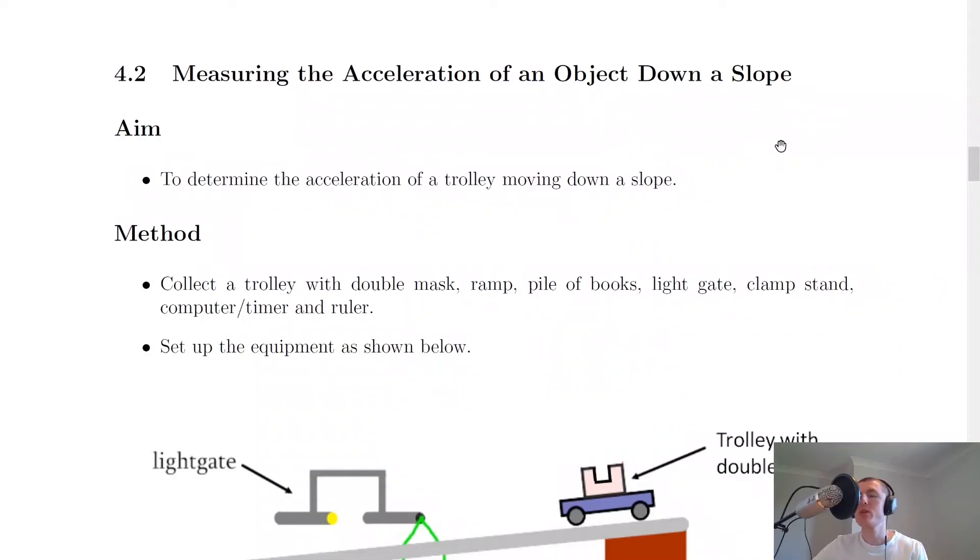Let's get started. Measuring the acceleration of an object down the slope is one of the compulsory experiments that the SQA says you have to be able to do and that you have to be able to describe for the exam. We're going to look through a scientific report layout with the aim, method, results, and so on, just to give you an overview of how you would actually do this experiment and take results.